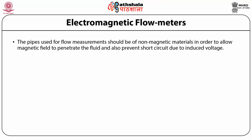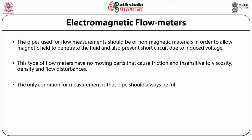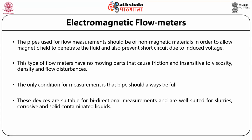The main advantage of electromagnetic flow meters is that they do not obstruct flow, so there is no pressure drop. They have no moving parts that cause friction and are insensitive to velocity, density, and flow disturbances. They have a wide linear range of 10:1 and are independent of the fluid's properties except for electrical conductivity. The only condition for measurement is that the pipe should always be full. These devices are suitable for bi-directional measurements and are well suited for slurries, corrosive, and solid-contaminated liquids.